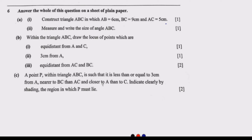Question part A says: construct triangle ABC in which AB equals 6 centimeters, BC equals 9 centimeters, and AC equals 5 centimeters. Here we are given all three side measurements. Another version gives two sides and two angles — for that scenario, look at the video on 2022 GCE Mathematics on construction.